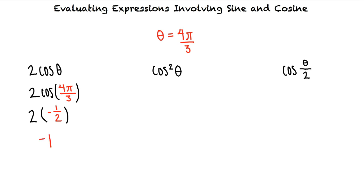Next, we'll substitute 4π/3 into the second expression. Once again, cosine of 4π/3 is negative 1/2, and this time we square negative 1/2 to result in an answer of 1/4.